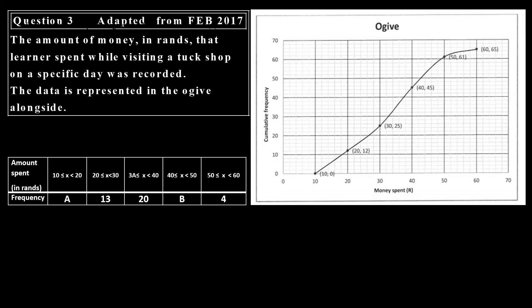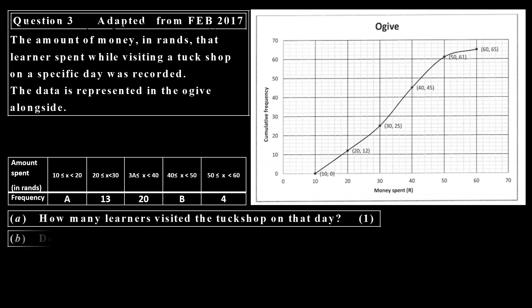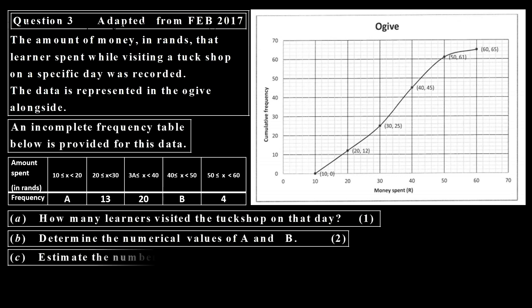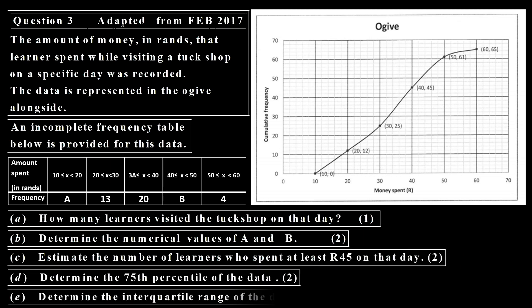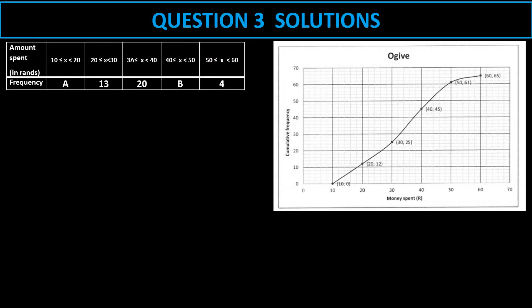Let's look at the last question. We are given an ogive and a frequency table. And then there are the questions that need to be answered. And there are five of them. We look at that. Now let's look at the solutions to question three.